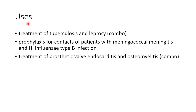Now let us see about the uses of rifampin. Rifampin is used in the treatment of tuberculosis and leprosy, for which a combination of drugs is used. It is also used in the prophylaxis for contacts of patients with meningococcal meningitis and Haemophilus influenzae type B infection.